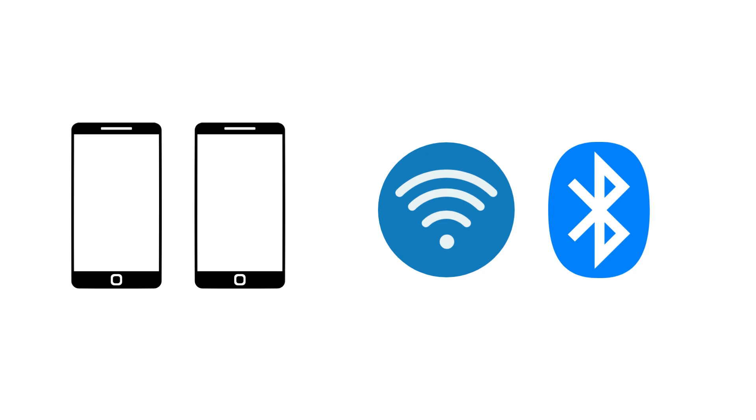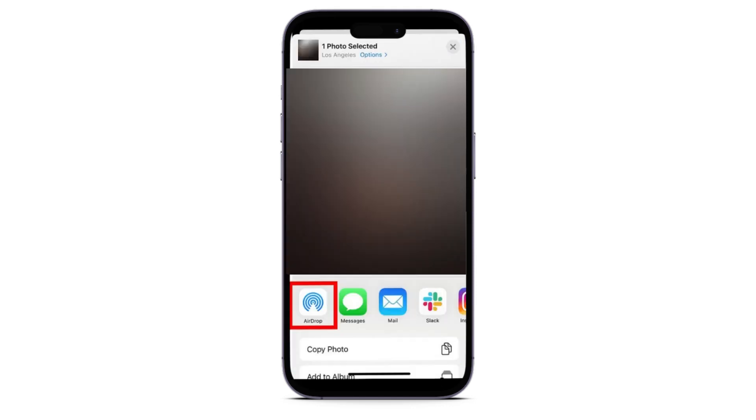Now I'm going to show you how to send photos using AirDrop. All you have to do is head over to your Photos and select any picture you want to send. Then tap the share button at the bottom left of your screen, and then tap AirDrop.